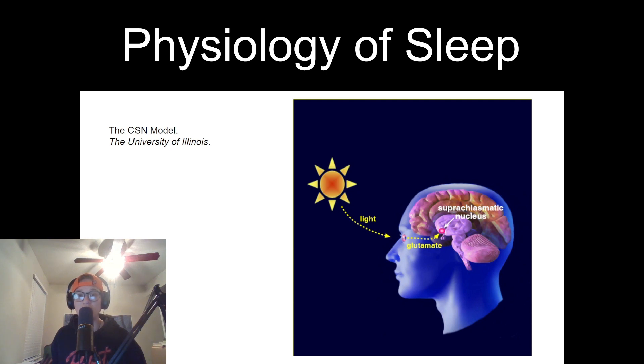There are disorders that have dysfunction in this system, so people will act out their dreams, and that's where we get some different types of sleep disorders. This muscle paralysis, termed atonia, is regulated by a complex interplay between the brainstem and various neurotransmitters.